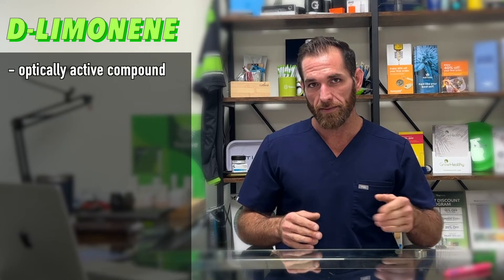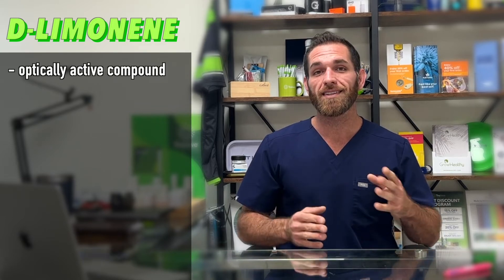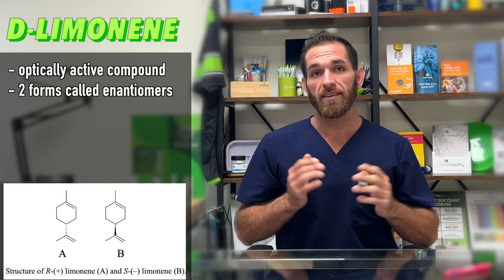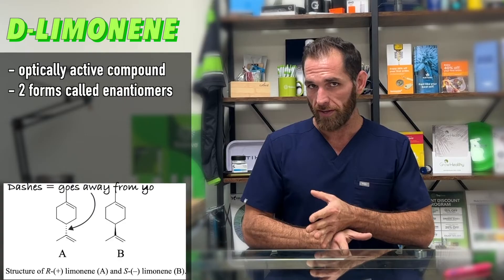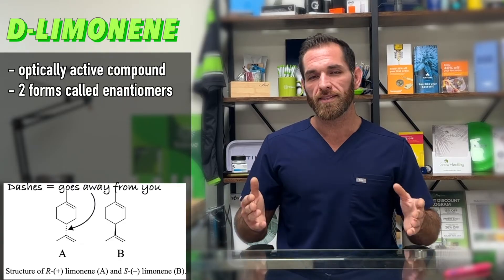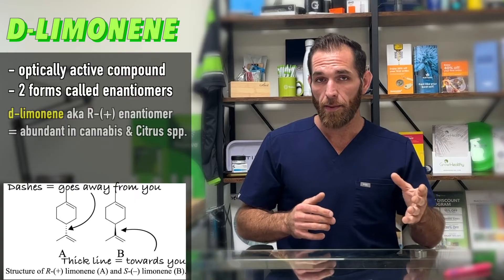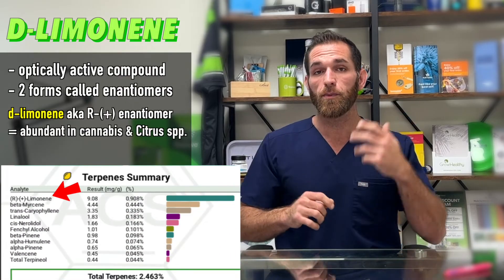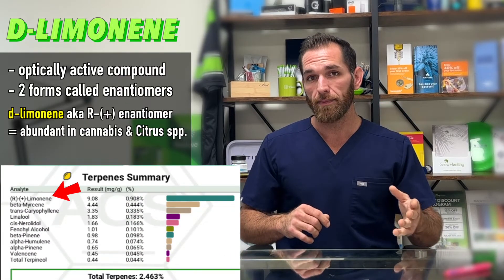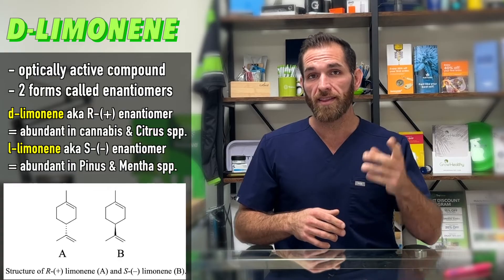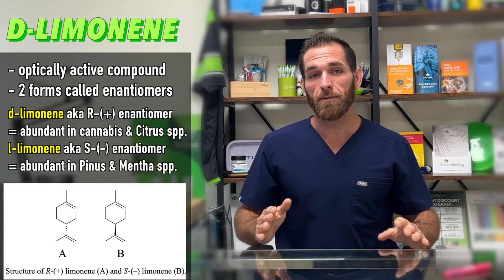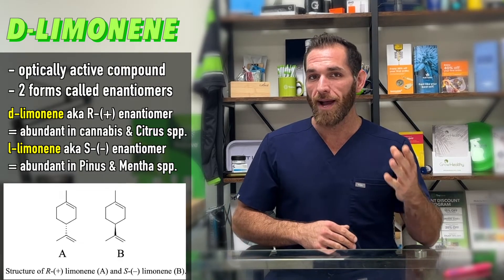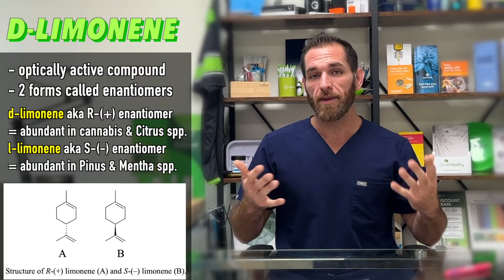Interestingly, limonene is an optically active compound, which means it exists in two forms called enantiomers — molecules that are mirror images of each other but can't be superimposed on one another. D-limonene, or the R version, is the one we see in cannabis. The other version, the L or S form, produces a totally different smell, more so found in the mentha and pinus species — kind of like pine and mint.